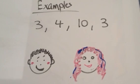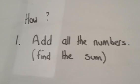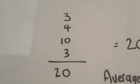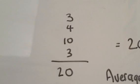We're going to find out the average time. The first thing we need to do is add all the numbers together. So, we add three plus four plus ten plus three, and we get twenty.